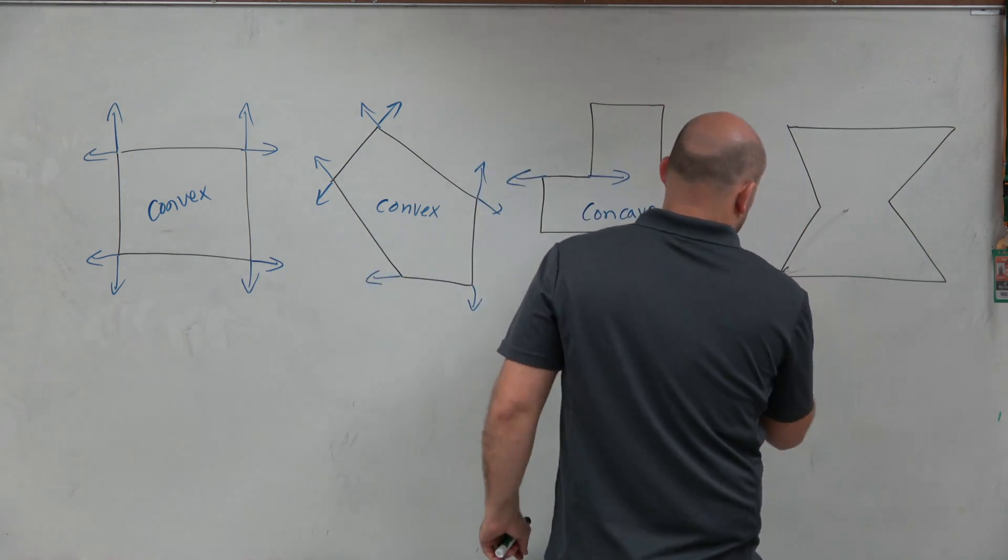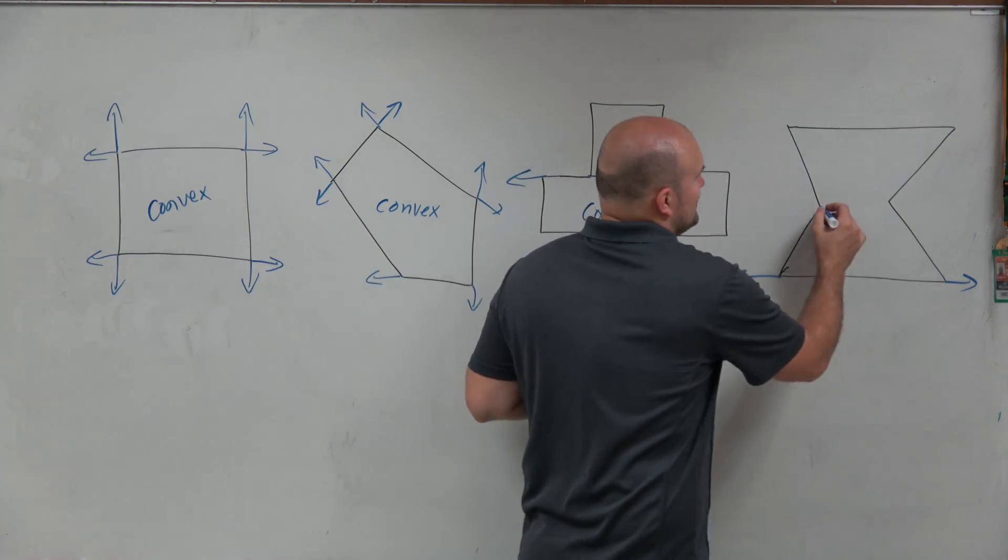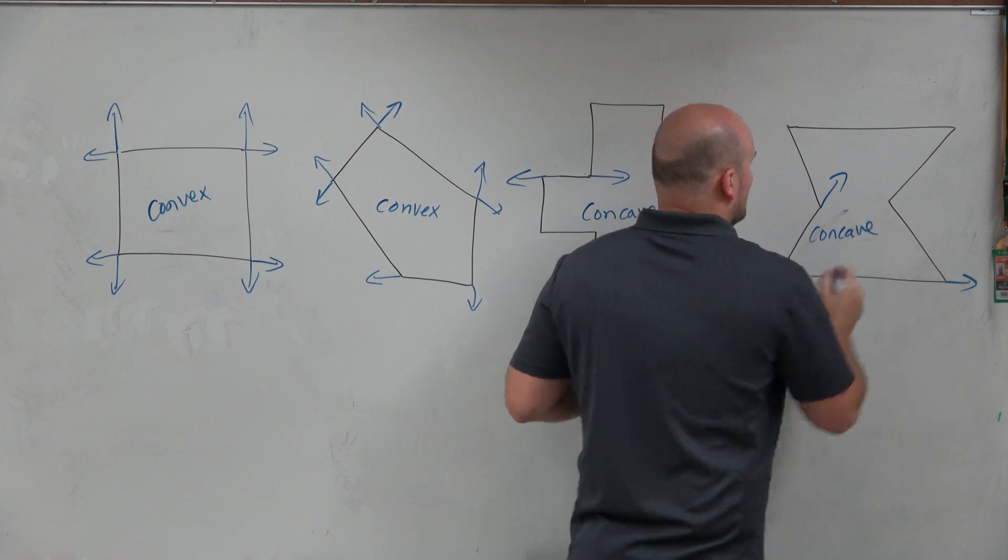And again, this one, you can see here, those sides do not enter into the interior. But when I move to this one, you can see it does. So again, this is another example of concave.